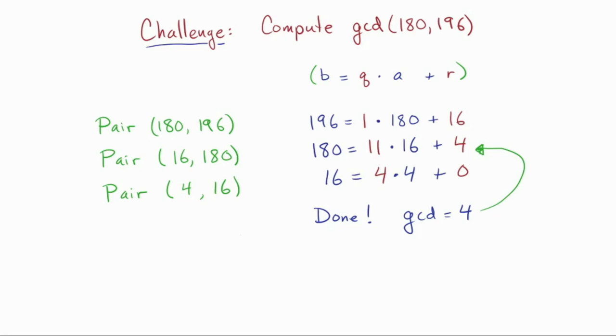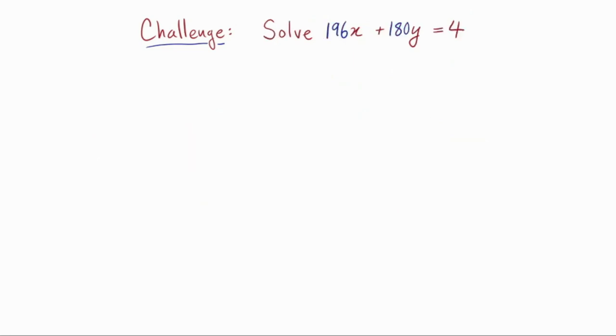Now, for the extended Euclidean algorithm, it will allow us to solve 196x plus 180y equals 4. It's important here that I have equals 4, that it's the GCD of 196 and 180 that's sort of my target. The extended Euclidean algorithm specifically answers that particular question. I want to think of this question as asking for a recipe for the number 4 in terms of the numbers 196 and 180. So keep that idea of a recipe in mind. Okay, first step of the Euclidean algorithm as before. We write 196 in terms of 180 by the division algorithm.